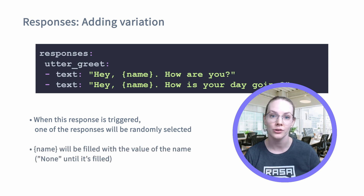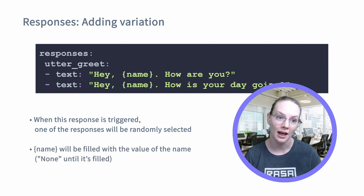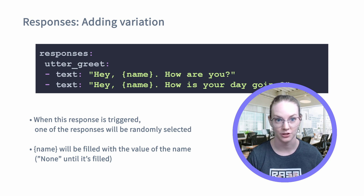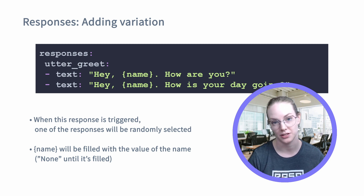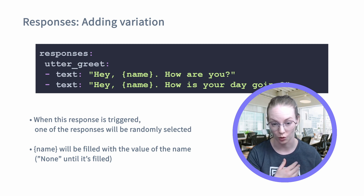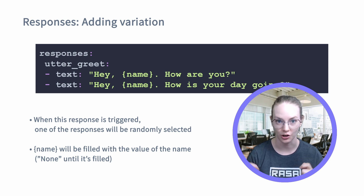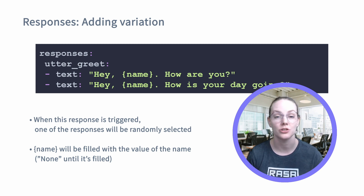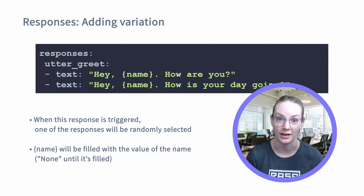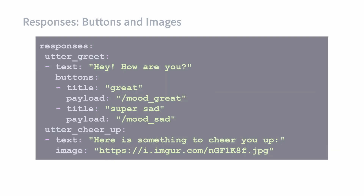You can also use slots in your response. Slots are variables that your assistant stores, and you can use the name of the slot in curly brackets. These are similar to f-strings in Python, if you're familiar with that.